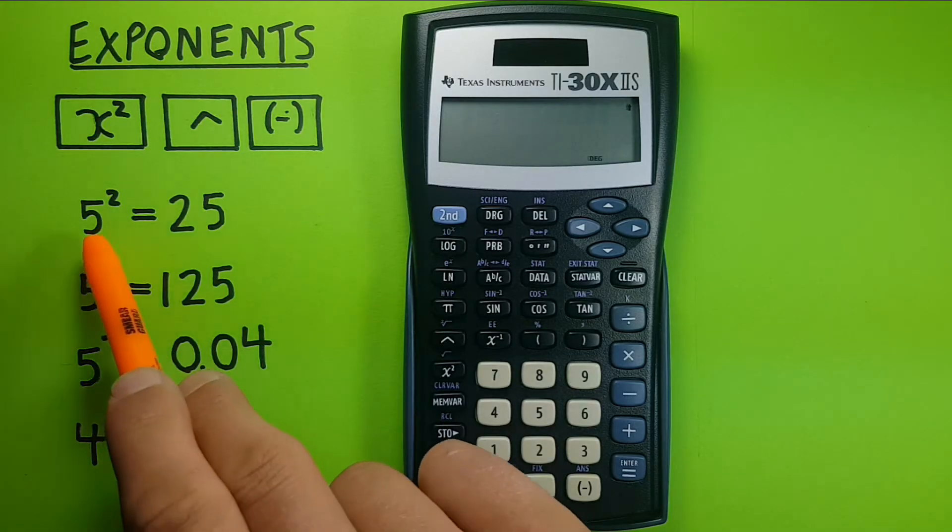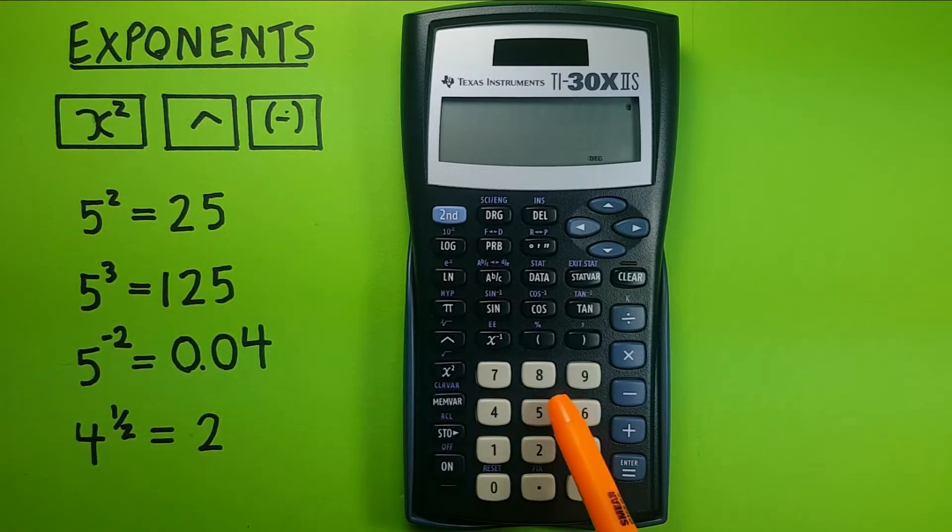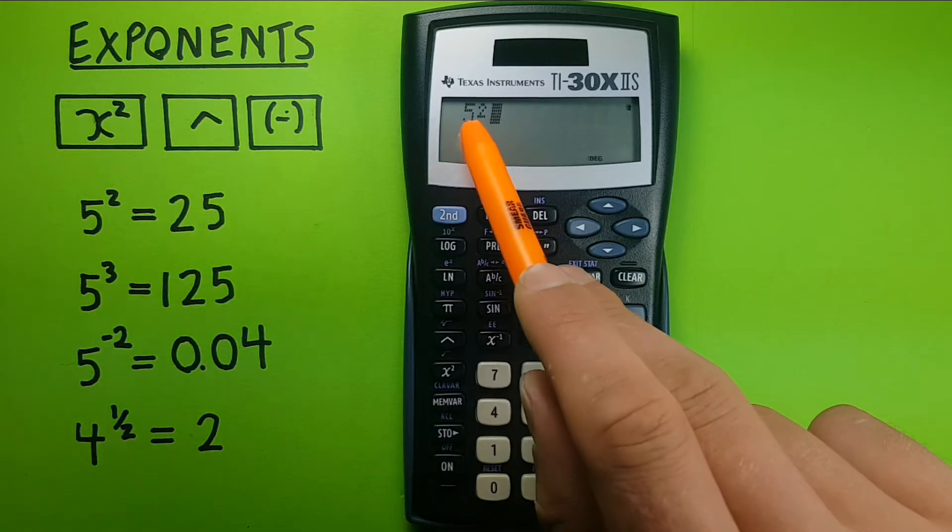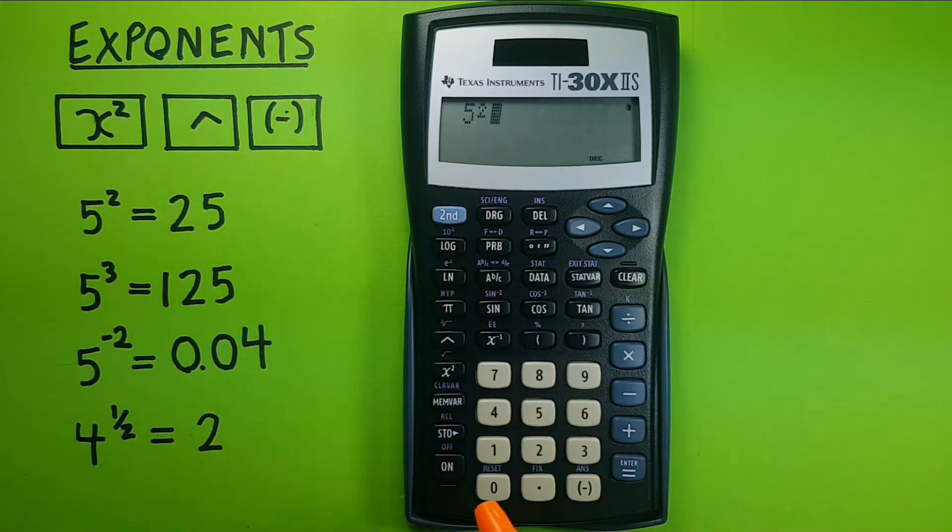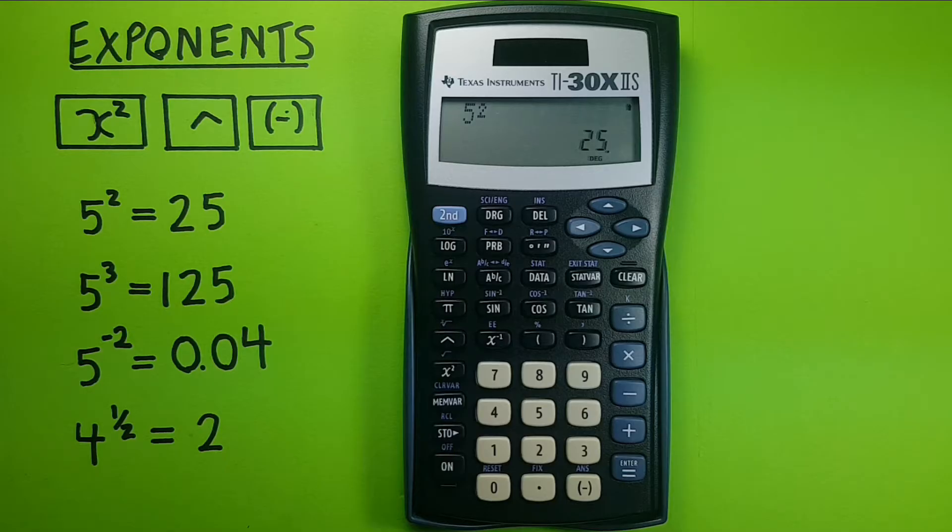We'll start off with the basics. If you want to square a number, let's say five squared, we would enter the number and then the x squared key. You see five squared on the top line there, and then hit the enter equal sign and we get 25, which we know is the correct answer.